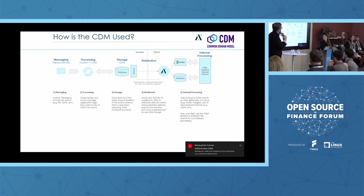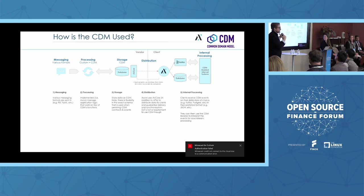Once the data is distributed, a client on the other side essentially needs to take in the CDM events and trigger different workflows internally or to consume that data. That's receiving CDM events on the data store of choice — for us, we support Kafka as well as different relational databases. And then as a client is trying to internalize that data, you can use the CDM libraries to already have the events and trades modeled for you, and then it's just a matter of making sense of those events depending on what you're trying to do.